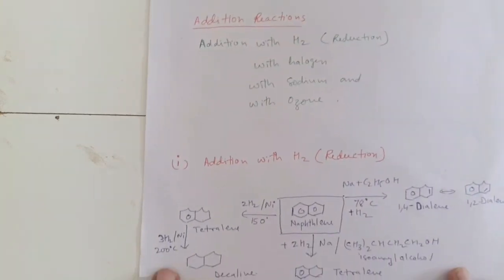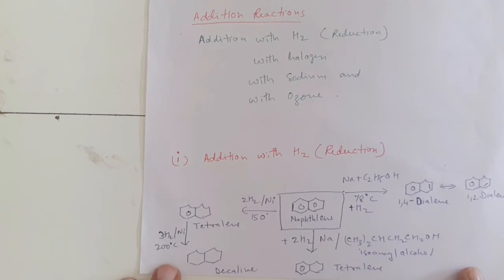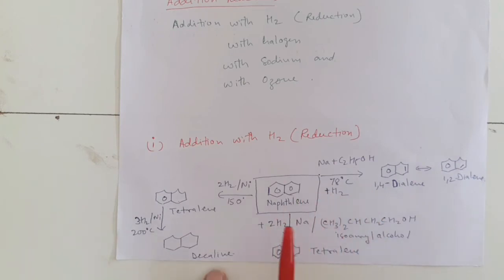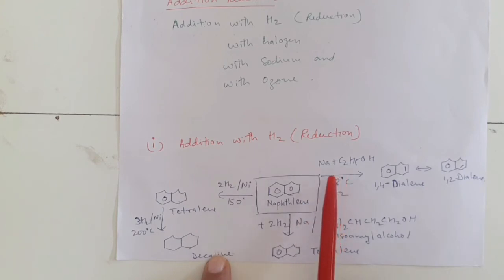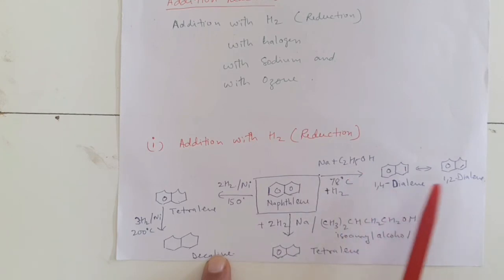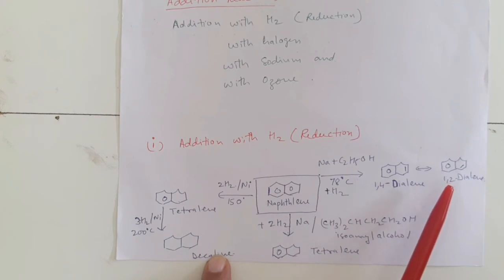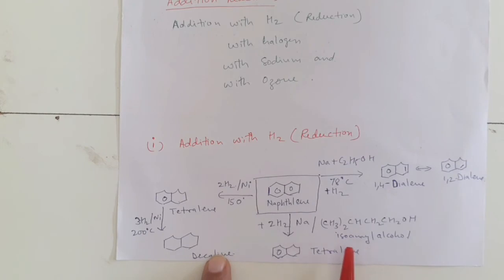First, the addition reaction with hydrogen — that is, the reduction of naphthalene. Naphthalene with hydrogen in the presence of sodium and ethyl alcohol gives 1,4-dihydro or 1,2-dihydronaphthalene; one double bond is reduced and we get the 1,4- or 1,2-dihydro product. With sodium and isoamyl alcohol, two molecules of hydrogen react with naphthalene and we get tetralin. With hydrogen in the presence of nickel at 150 degrees centigrade, again we get tetralin.